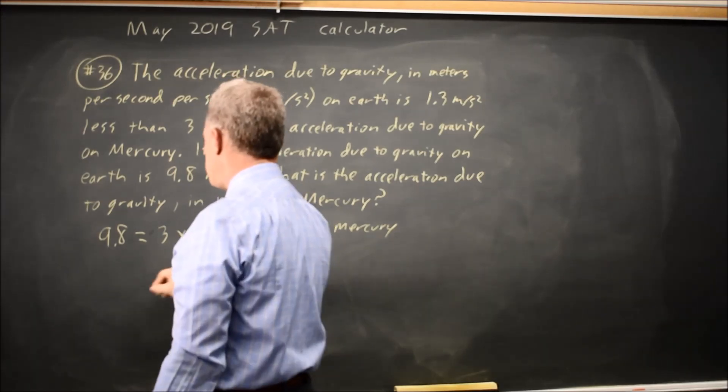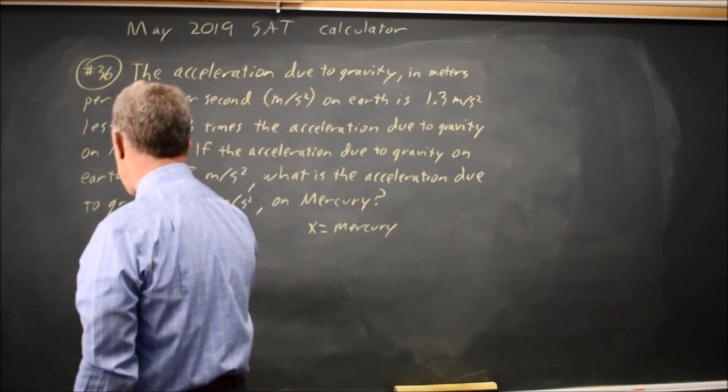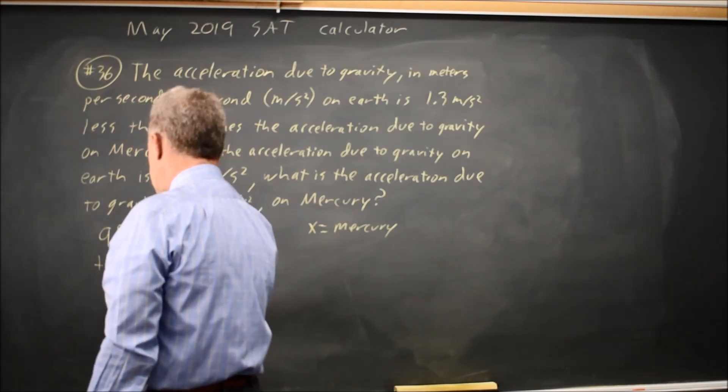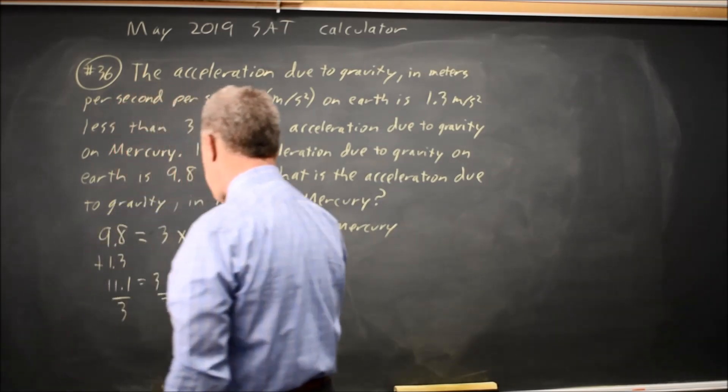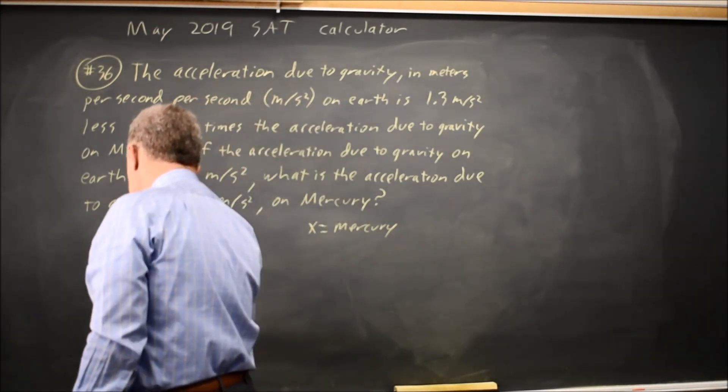So if I add 1.3 to both sides, which I could also do on the calculator, I get 11.1 equals 3x. Divide both sides by 3, and if I reach for my calculator, I'll get x equals 3.7.